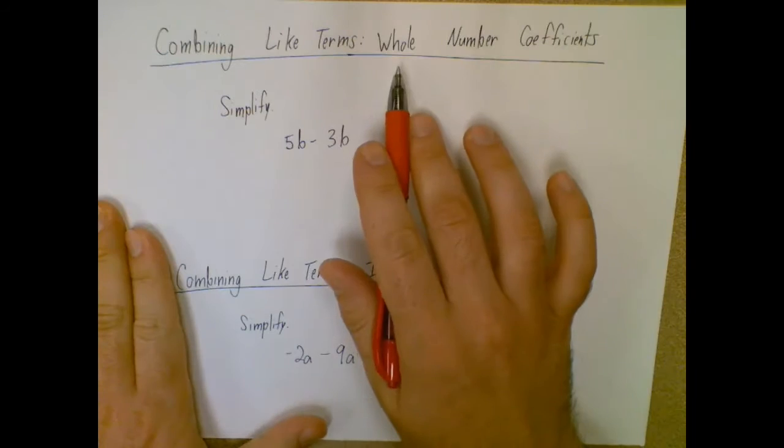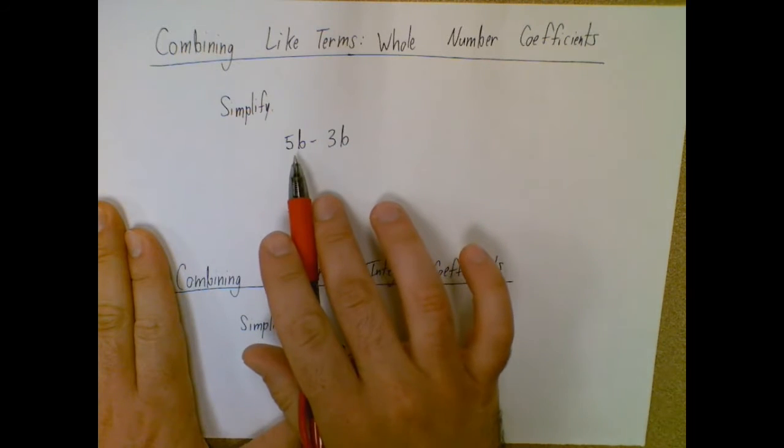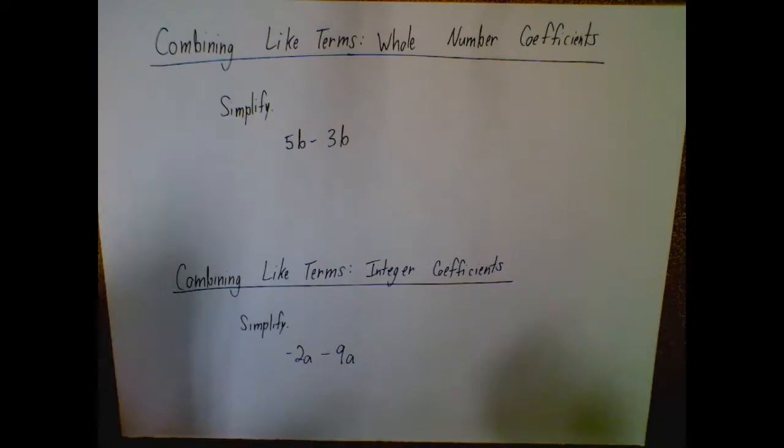So first things first, looking at whole numbers, here we have 5b minus 3b. We could be adding or subtracting, but the principle works the same way.